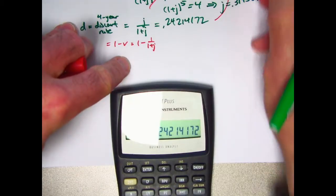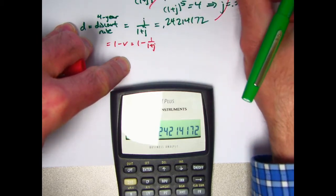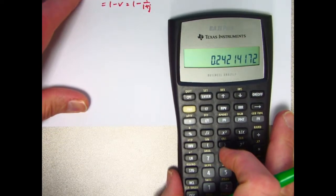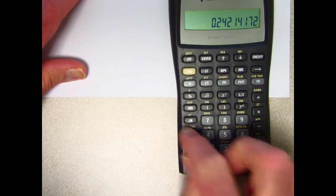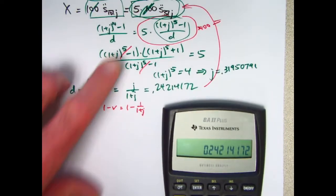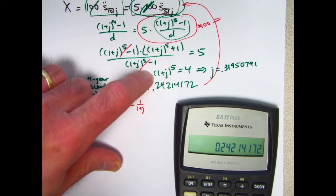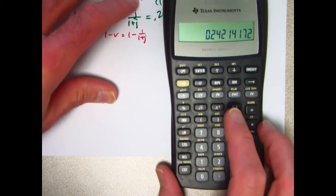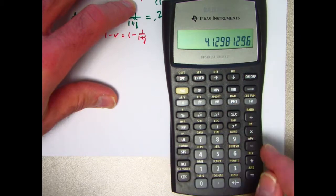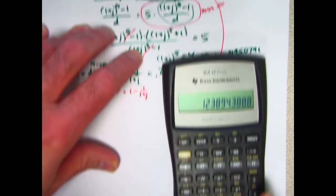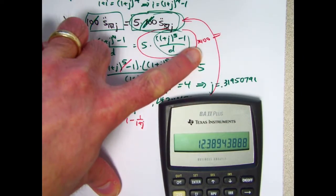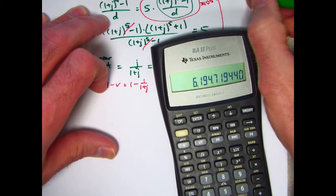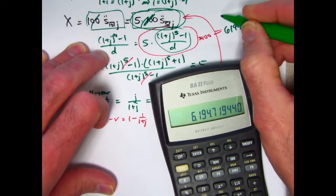I will now go back up here. Essentially take this thing and multiply it times 100 to get the answer to the question. So again, this is d. Let me store that now in register 0. So d is now in register 0. Calculate (1+j)^5. Well, we already have (1+j)^5. It's 4. 4 minus 1 is 3. I want to do 3 divided by d. Actually, I guess I didn't need to store that. I'll take the reciprocal of this. Times 3. Times 5, then times 100, so times 500. There is the answer to the question, 6194.72. That is the value of x.